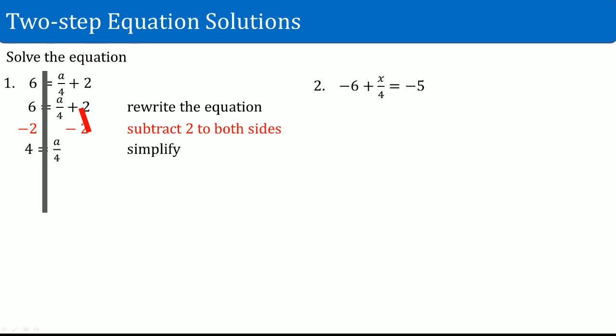Now you have a divide by 4 left over on the right-hand side. To get a alone, you do the opposite of divide by 4, which is to multiply by 4. Multiply 4 to both sides — this cancels out because it makes the number 1. You get 16 on the left-hand side, and the right-hand side just becomes a.